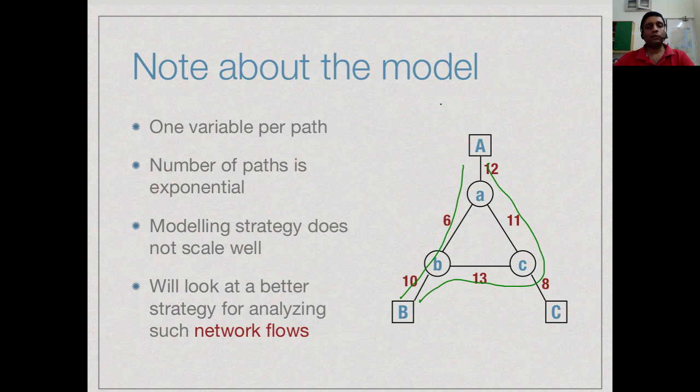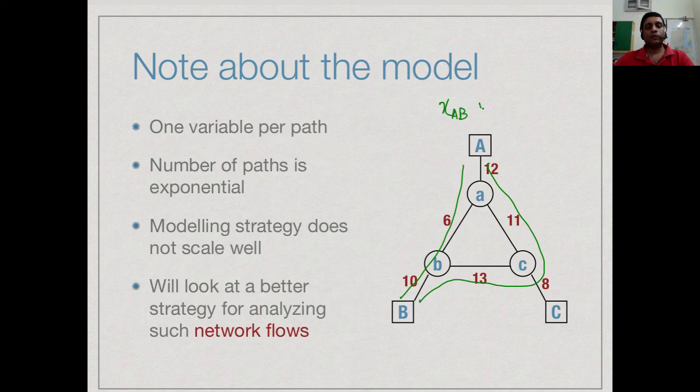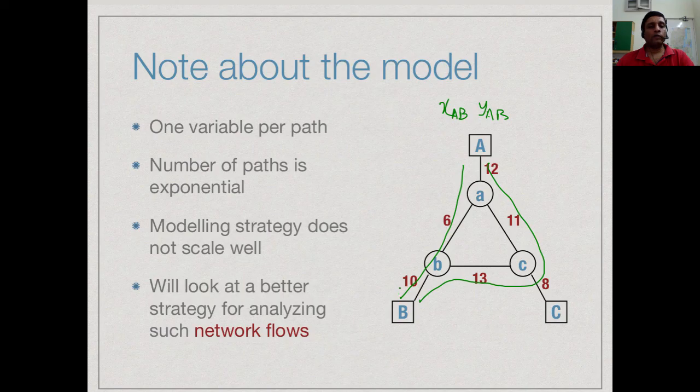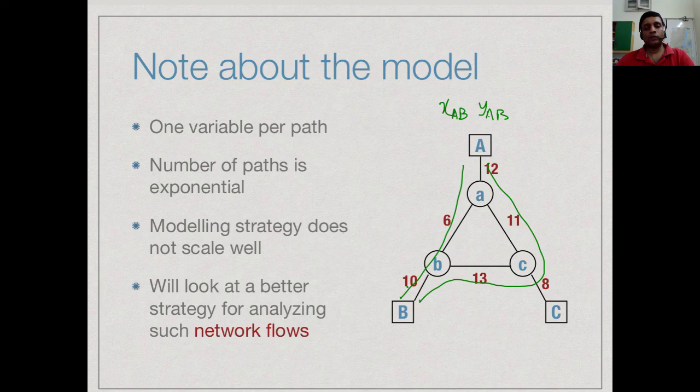And for each path, we have a variable, we have x_AB, y_AB and so on. Every path is represented by the quantity flowing through that path. The problem with this is that the number of paths flowing through a graph is going to be exponential.